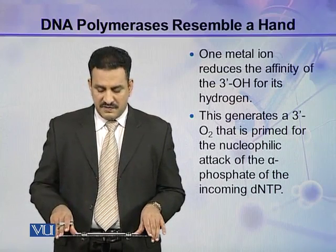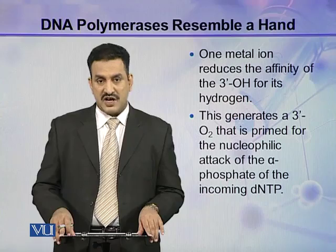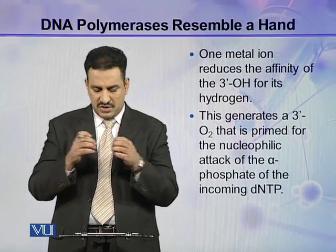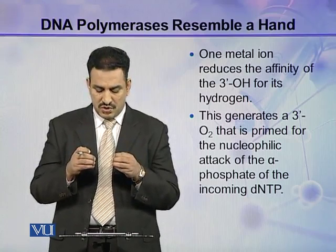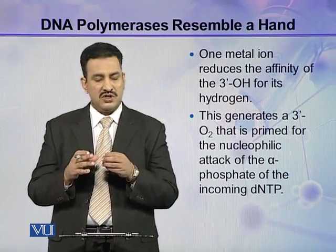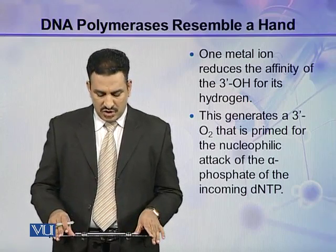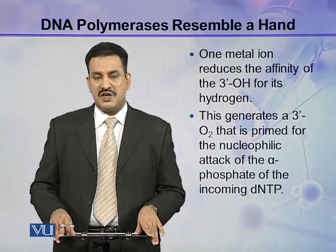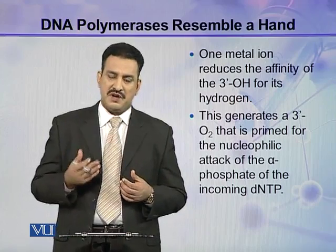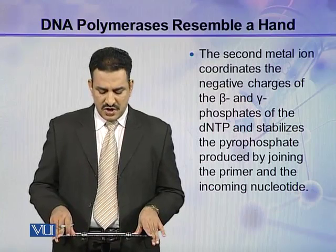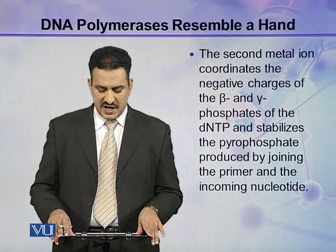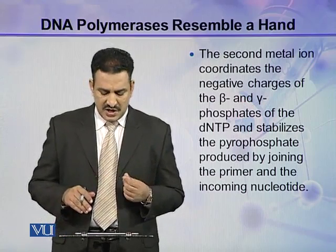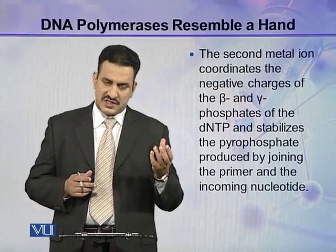One metal ion reduces the affinity of the 3-prime hydroxyl for its hydrogen. This affinity between oxygen and hydrogen is reduced so that it can attack the alpha phosphate of the incoming nucleotide, generating a 3-prime oxygen primed for the nucleophilic attack of the alpha phosphate of the incoming dNTP. The second metal ion coordinates with the negative charges of the beta and gamma phosphates of the dNTPs — that is, when pyrophosphate releases, this metal ion coordinates with the negative charges present on it.